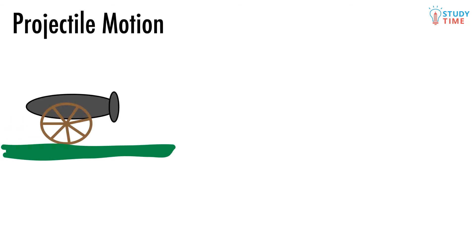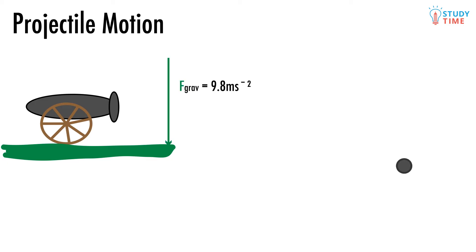Objects flying through the air leads us into projectile motion. As soon as you launch an object into the air, it becomes a projectile, and it enters a very special kind of motion called projectile motion. The biggest idea of projectile motion is also the one that almost everyone struggles to grasp: the only force acting on the object is the force of gravity. That's it — there's nothing else. Gravity causes objects to accelerate downwards at 9.8 meters per second per second.